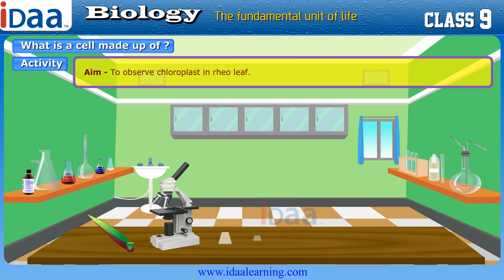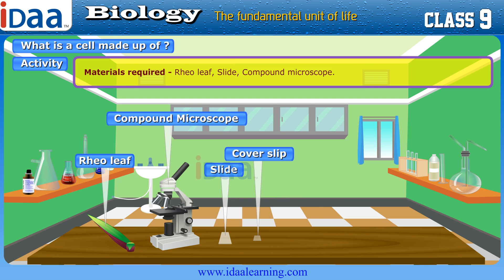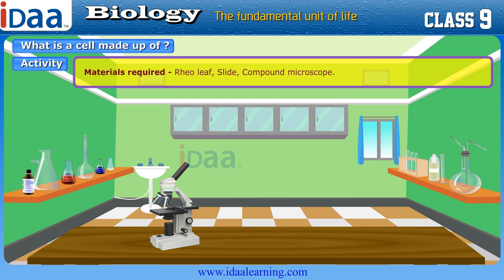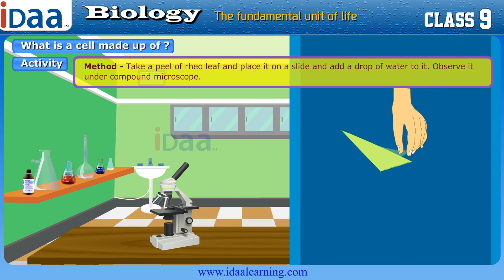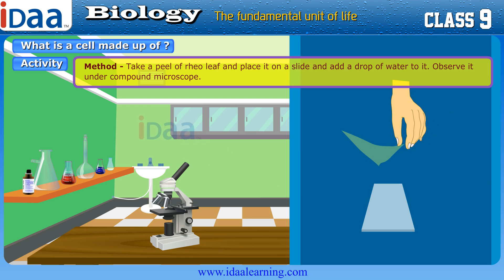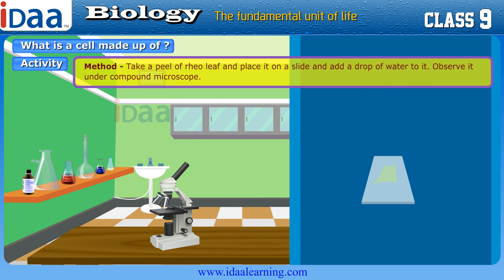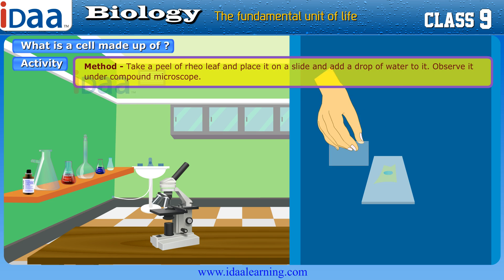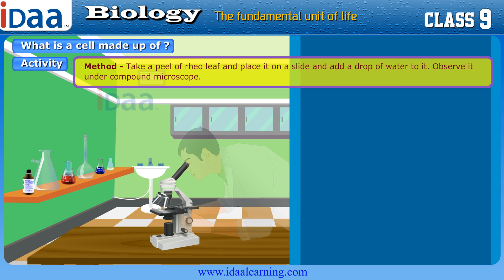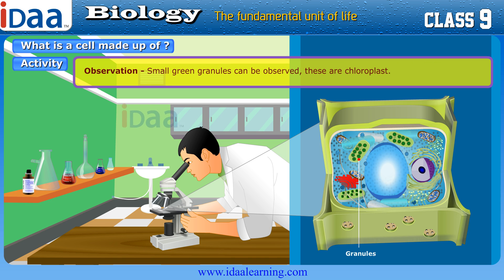Activity: Aim — To observe chloroplast in Reo leaf. Materials required: Reo leaf, slide, and compound microscope. Method: Take a peel of Reo leaf, place it on a slide, and add a drop of water to it. Observe it under the compound microscope. Observation: Small green granules can be observed — these are chloroplasts.